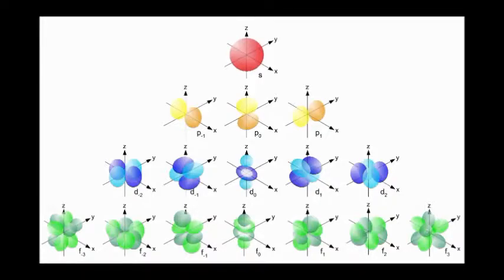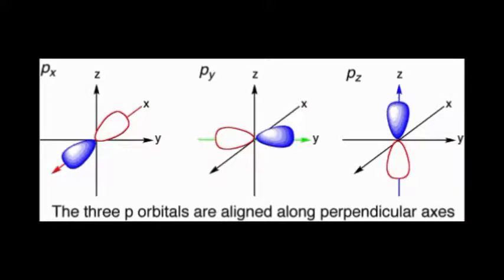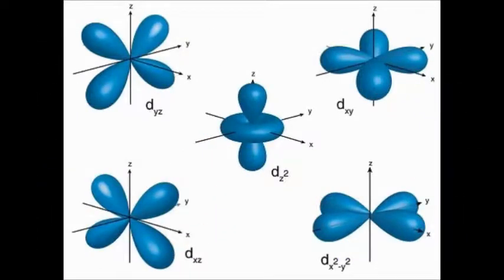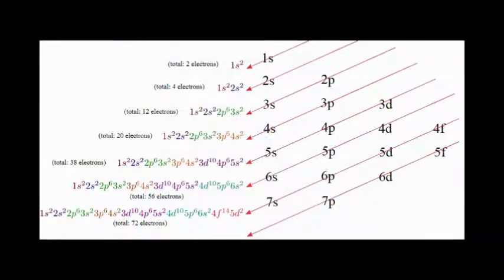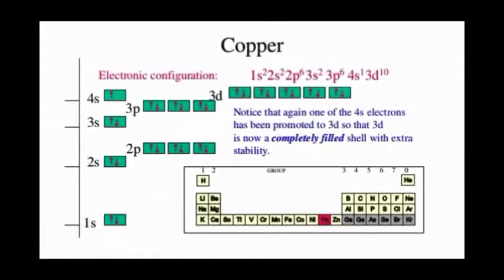In S there are two electrons, in P there are six electrons, and in D there are ten electrons. The sequence goes: 1S, 2S, 2P, 3S, 3P, 4S, 3D. But there are two main exceptions: chromium is 4S1 3D5, and copper is 4S1 3D10. But bro, that's really not it.